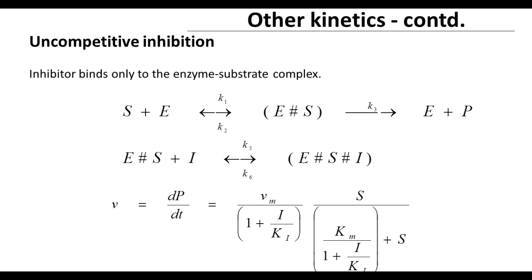So these are the three kinds of inhibition kinetics we look at in this course. There are other types of kinetics as well, but we will not cover those in this course.